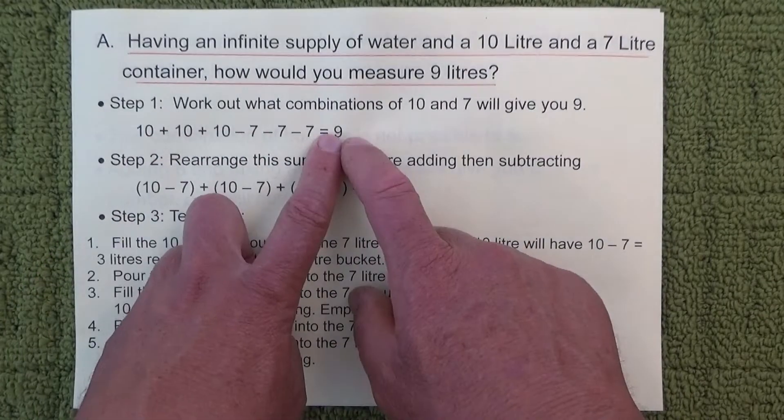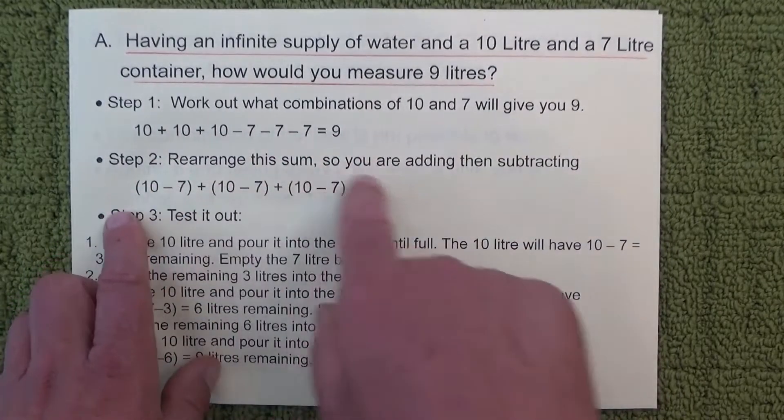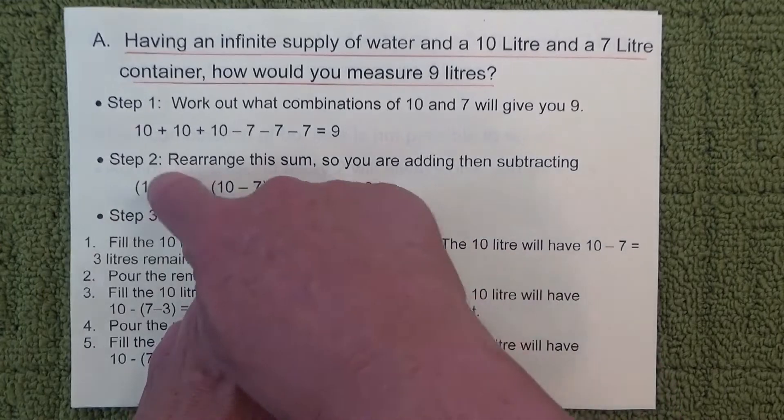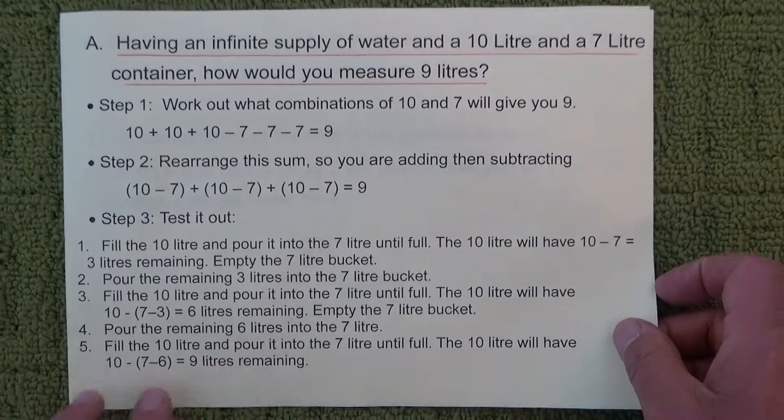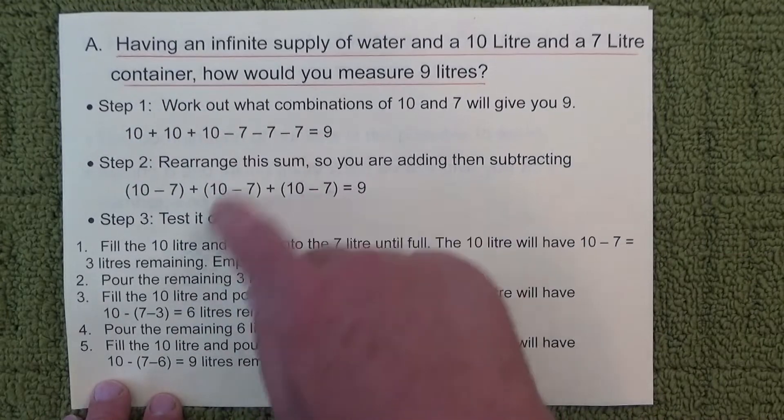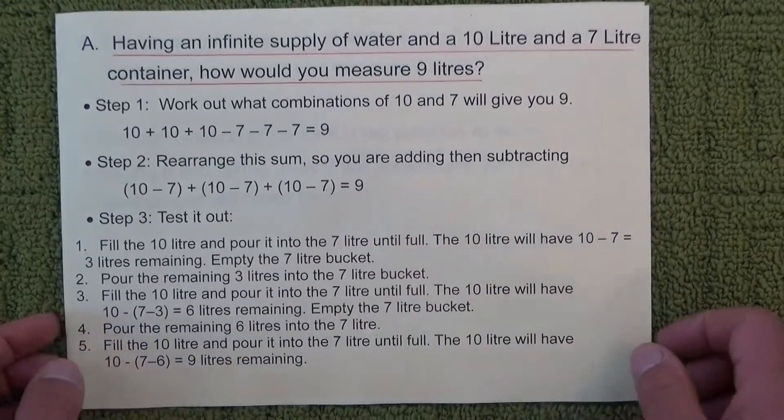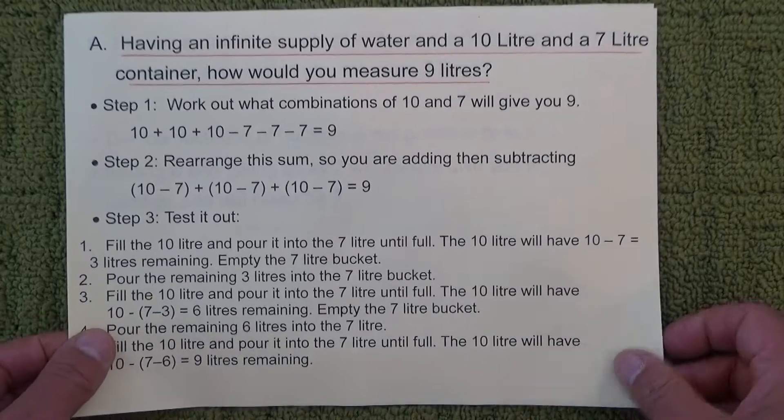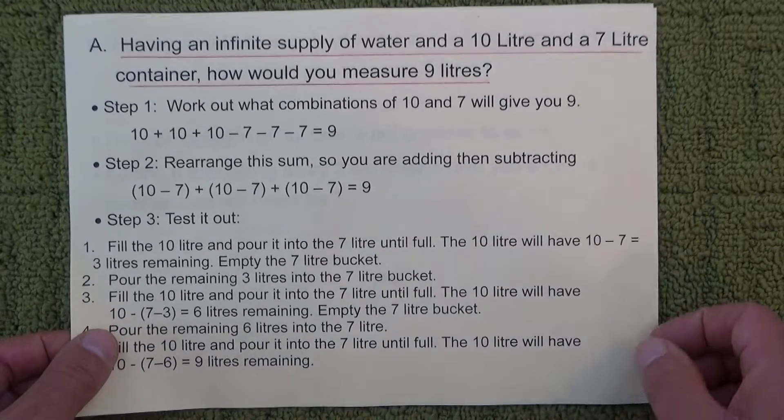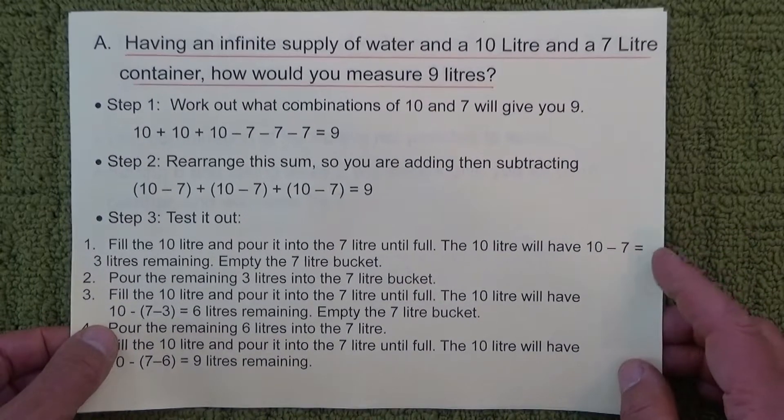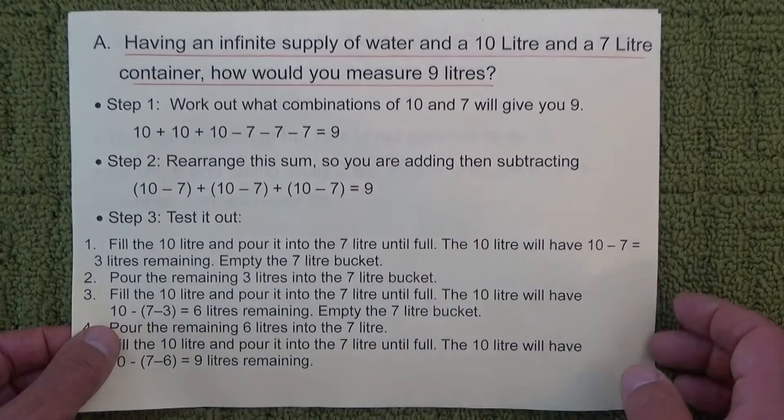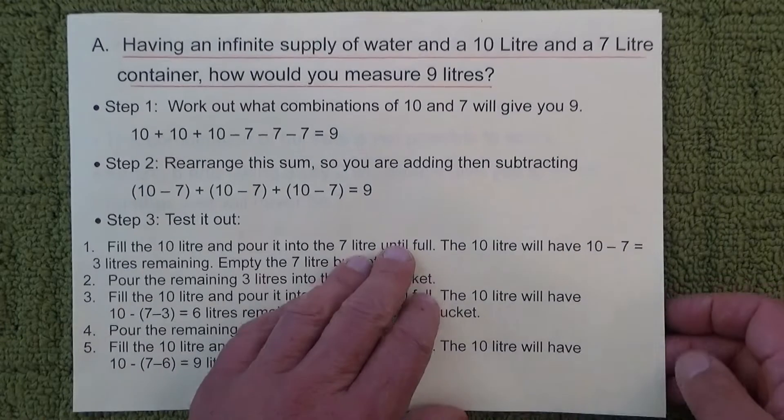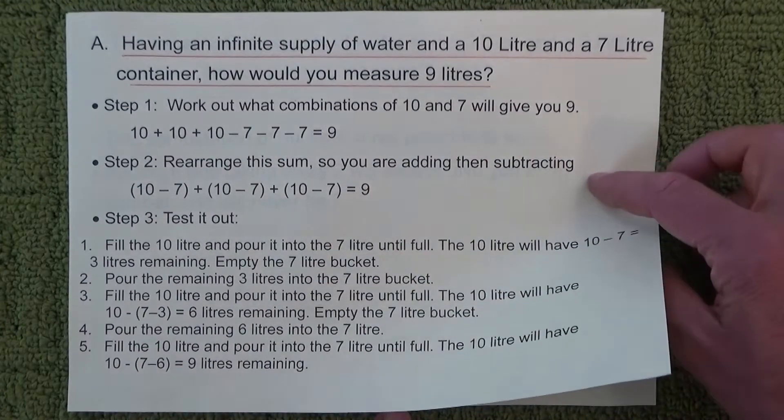So you can see there that actually working out different combinations that will give you nine, and then rearranging it so that you're adding and subtracting all the way, and you test it out - you can see that what you've worked out there actually works in practice without actually having to think about all the backwards and forwards of filling and emptying. First of all, you do some quick calculations on paper first.